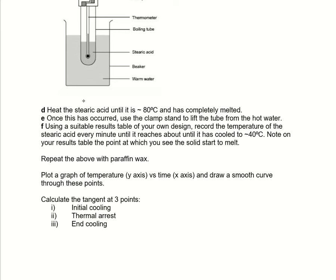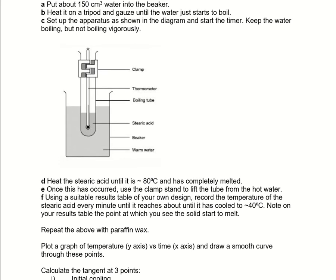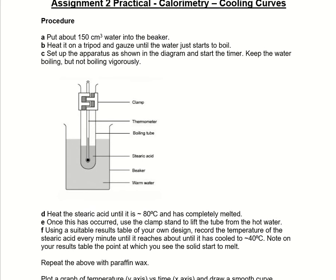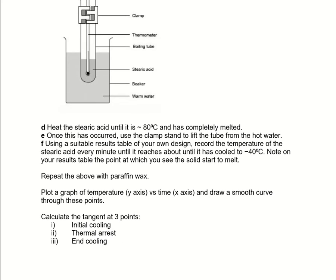Hi and welcome to this video for the BTEC Applied Science Level 3 Unit 2. In this we'll be looking at the Assignment 2 practical and the graph that you need to draw for it. This is to do with calorimetry, where we'll be trying to find out the melting point or freezing point — essentially going from liquid to solid — for particular chemicals. Depending on what you've been given, some type of wax, stearic acid or similar. There are others that can be used but the general principle holds the same.